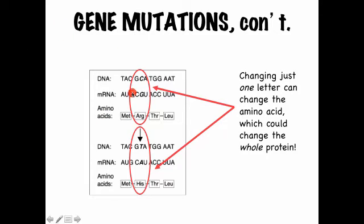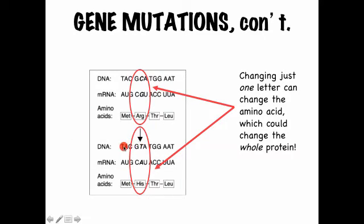Here's a quick diagram showing what substitution looks like. The original DNA strand reads TAC, GCA, TGG, and AAT, which would transcribe into mRNA codons AUG, CGU, ACC, and UUA — coding for the amino acids methionine, arginine, threonine, and leucine. Now imagine we change that C to a T — that's a substitution. The other three-letter codons don't change, so it really just affects one area of mRNA, which then gets translated into histidine instead. That's a one amino acid change.